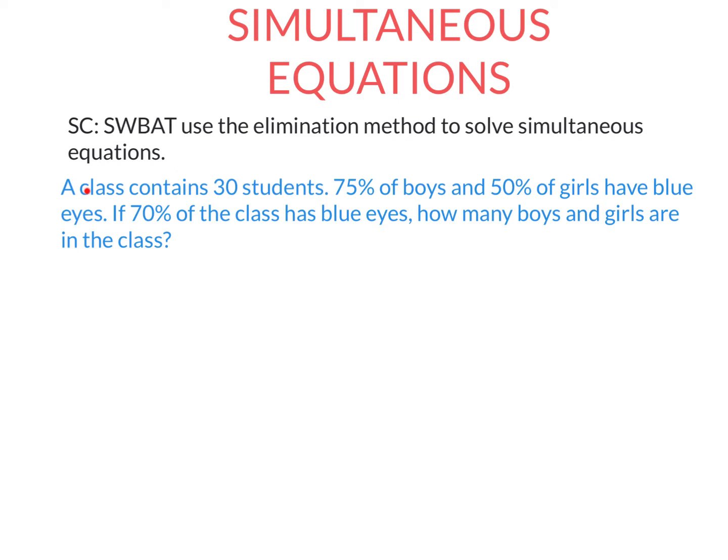Let's look at this question. A class contains 30 students. 75% of boys and 50% of girls have blue eyes. 70% of the class has blue eyes. We're going to find how many boys and how many girls are in the class.